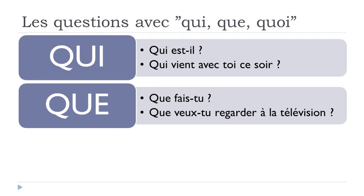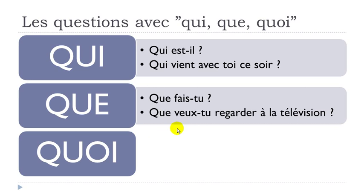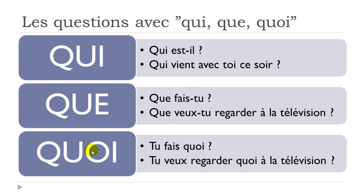You can hear that I've been raising my voice a little bit at the end. The other option is QUOI. QUOI also means WHAT. Now you might ask: why do you have both QUE and QUOI? Well, for a good reason. I've taken the same question we had before — QUE FAIS-TU — but if you use QUOI, you don't start the question with it.